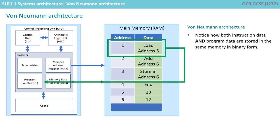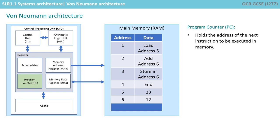Computers are complex machines, capable of fetching and executing instructions billions of times a second, using a very methodical sequence of events inside the CPU. In order to do this, they make use of special-purpose registers, which we introduced in the last video. Let's take a look at each one and see what it's used for.